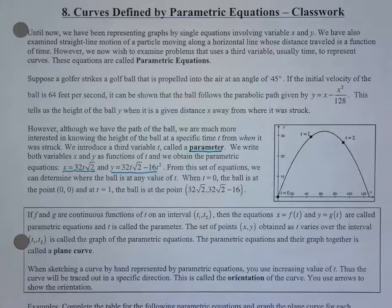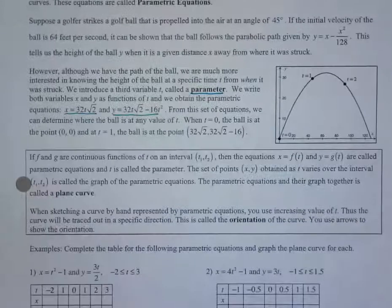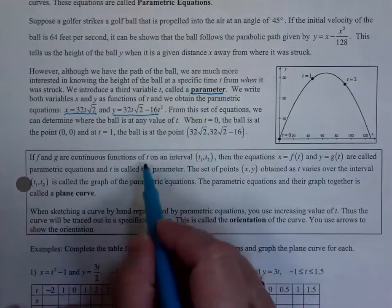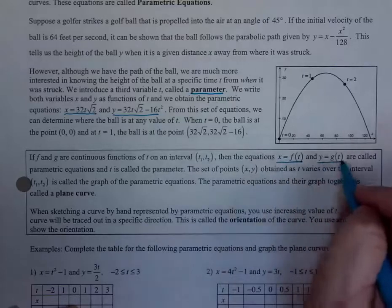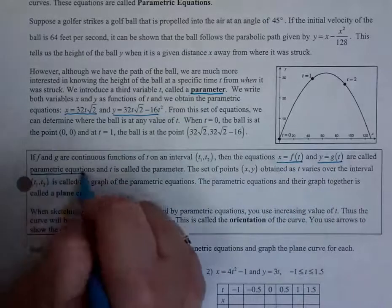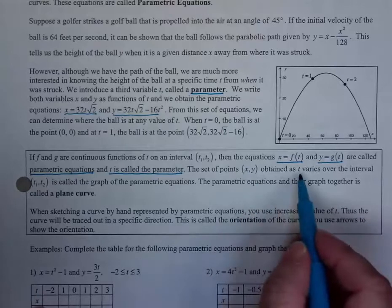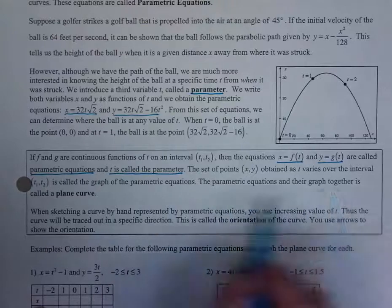But if we introduce this third variable called a parameter and change the equations, we get an equation with x and t, and then an equation with y and t. This allows you to define specific points on a graph based on when you get there. Because now we're not restricted to going from left to right — time is the one that changes everything — we can graph things backwards. If we have two functions f and g that are continuous functions of t on the interval from t1 to t2, the equations x as a function of time and y as a different function of time are called parametric equations, and t is called the parameter. The set of points obtained as you plug in different values of t is the graph, and the parametric equations together with their graph is called a plane curve.